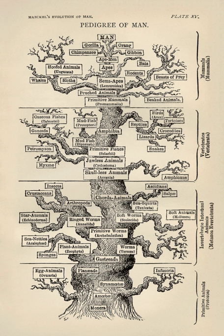Current research has widened to cover the genetic architecture of adaptation, molecular evolution, and the different forces that contribute to evolution including sexual selection, genetic drift, and biogeography. The newer field of evolutionary developmental biology investigates how embryonic development is controlled, creating a wider synthesis that integrates developmental biology with the fields covered by the earlier evolutionary synthesis.